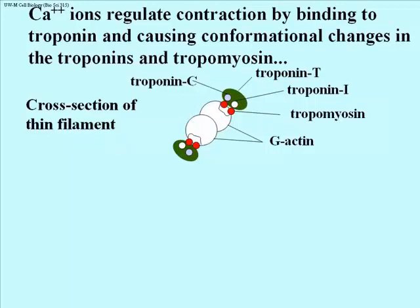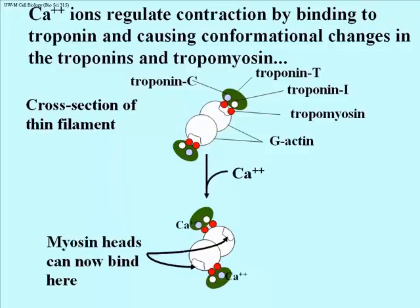We have names for the troponins: they're troponin T, I, and C. We're not going to be too concerned with what each is called or what they specifically do. The key picture is how calcium interacts with the troponins, changing their shape and eventually the shape of tropomyosin, giving access to the myosin heads. In the presence of calcium, as you can see in this cross-section, the troponins and tropomyosin have shifted position, exposing two sites — one on each actin monomer — to which the myosin heads can now bind.